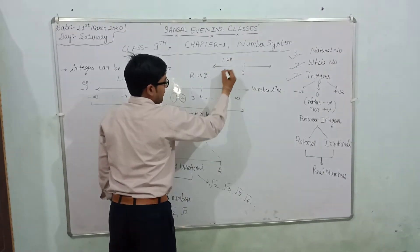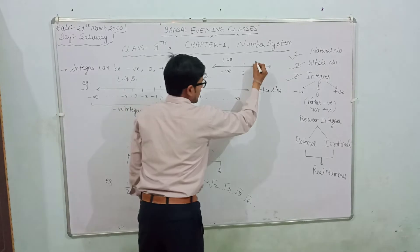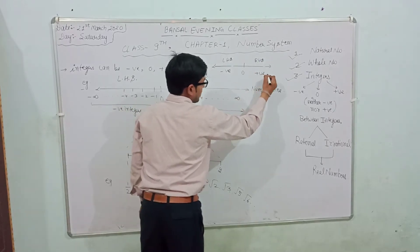On the left side of zero, we have negative numbers, and on the right side of zero, we have positive numbers.